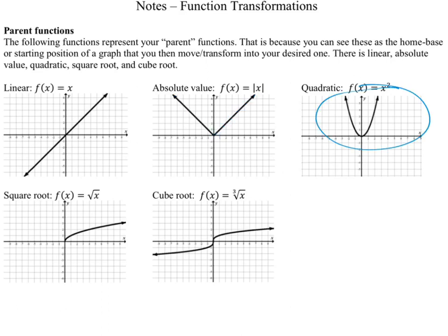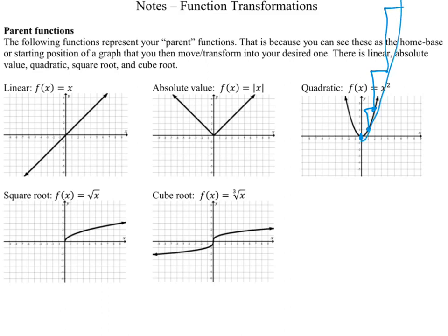This is the base quadratic. The vertex of our quadratic is at the origin. As you go along one side, the slopes between our points go up 1 right 1, then up 3 right 1, then up 5 right 1, then up 7 right 1. It kind of has this shape, and it does the same thing on the other side.